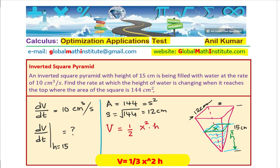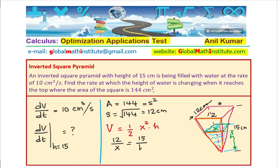We have two variables, so we need to relate them. Using similar triangles from the cross-section, the sides are in ratio: 12 over X equals 15 over H. Since we want to find the rate of change at a given height, we should eliminate X and express it in terms of H.